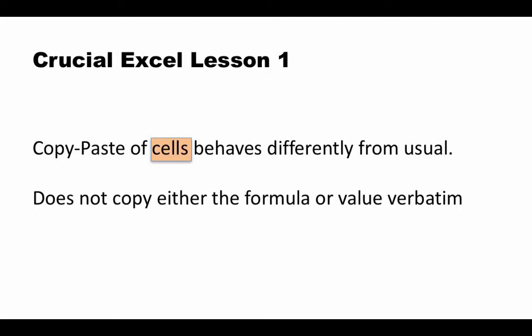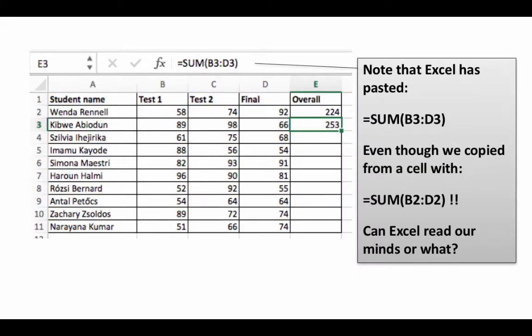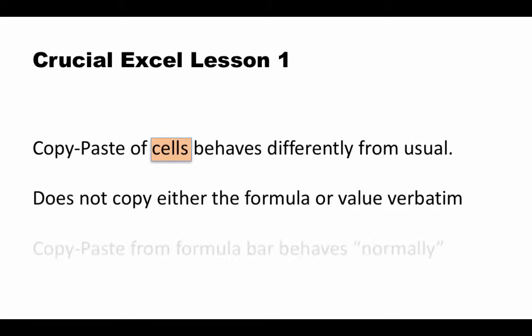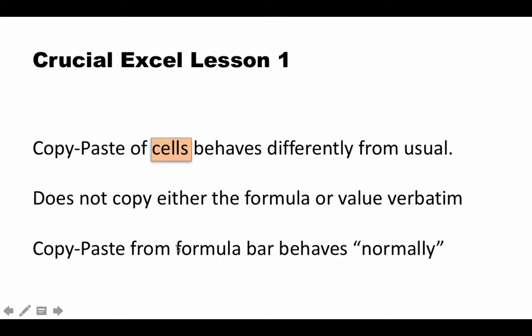The cell contained the formula equals SUM(B2:D2) and the actual result of 224. When you select the cell and hit copy, it doesn't copy either of those things—instead it copies something different, and that is the source of Excel's intelligence. When you copy-paste from the formula bar, it's just like regular copy-paste, but copying a cell works differently.